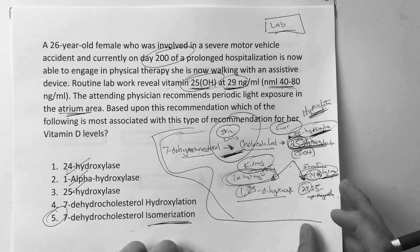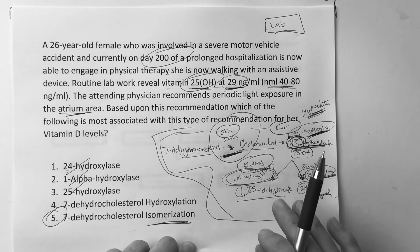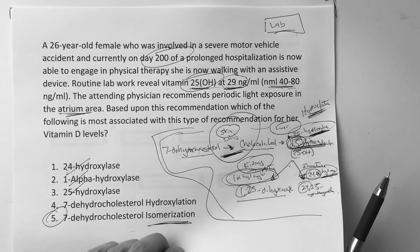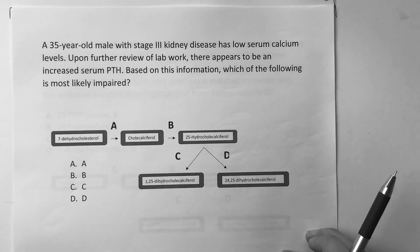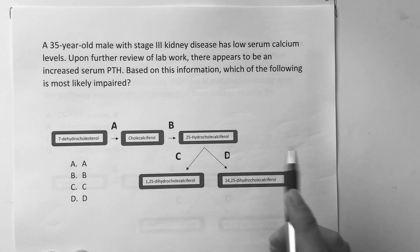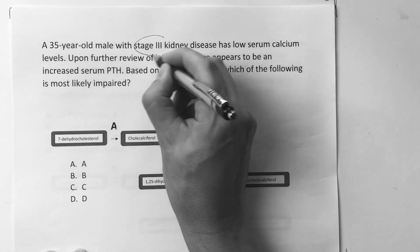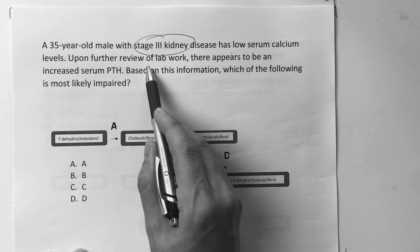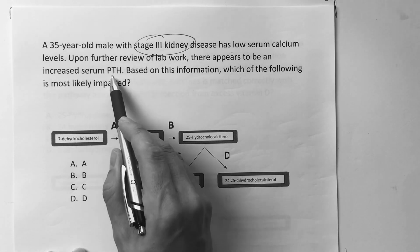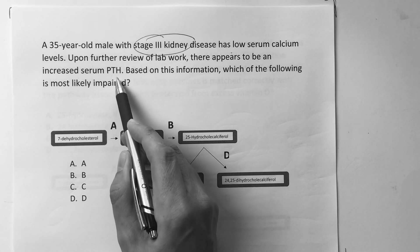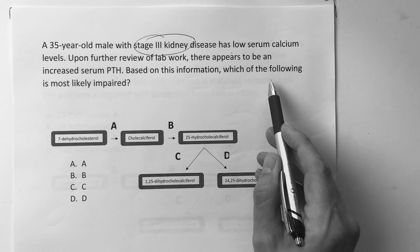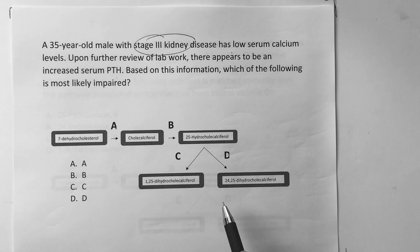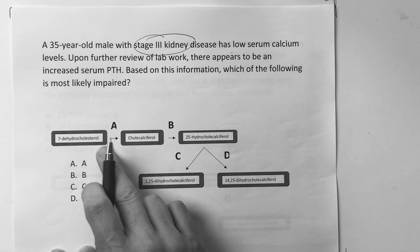If you know the pathway this way, you'll get any vitamin D question right — just know the pathway, the locations, and the enzymes. The second question: a 35-year-old male with stage 3 kidney disease has low serum calcium levels. Upon further review of lab work, there appears to be an increased serum PTH. Based on this information, which of the following is most likely impaired?